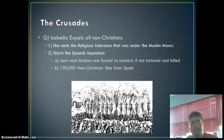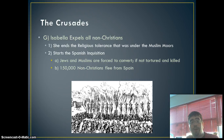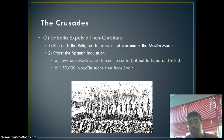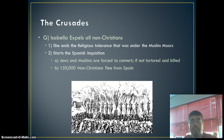Isabella still wants to get rid of all non-Christians in the land. Even though they now control the land politically, they don't own it socially. She gets rid of the religious tolerance the Muslims had put in place under the Moors and starts what is known as the Spanish Inquisition. Thousands upon thousands of Jews and Muslims are forced to convert to Christianity, and if they're not, they are tortured and killed. About 150,000 non-Christians flee from Spain — some to North Africa, and many Jews to Poland in Eastern Europe.